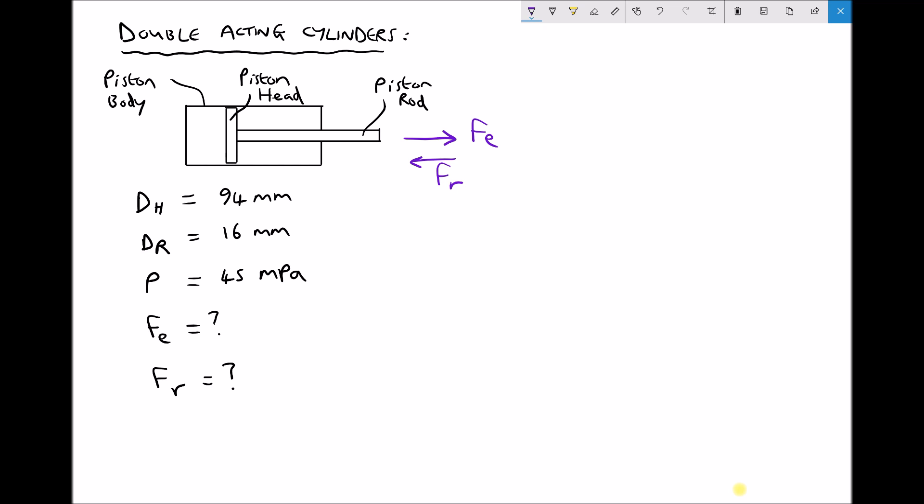If we look at our double-acting cylinder and first consider the extension stroke, when the cylinder is extending we have a build-up of pressure behind the piston head. That pressure acts on what we call the full bore of the cylinder. By the full bore we mean the area of the piston head. That pressure is being applied to this full area here. As we will see in a moment, the area is directly proportional to the force.